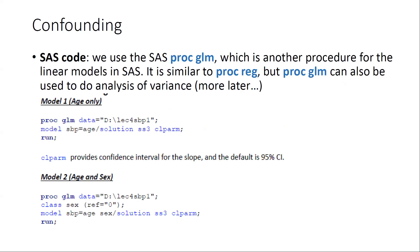Here is the SAS code. I will show how to use SAS to get the output at the end of the lecture, so here I will only show you the code and give you the SAS output. One comment on the SAS code: we can use the SAS procedure called PROC GLM, which stands for general linear model. This is another procedure for linear regression in SAS, similar to PROC REG, but PROC GLM can also be used to do analysis of variance, which we will discuss more in lecture nine.